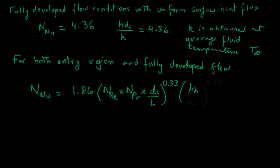Then in parentheses, μB/μW raised to power 0.14. In this case, L is the length of the pipe, Dc is the characteristic dimension, which is the inside diameter, and all the physical properties, including μB, where μB is the bulk viscosity, all these properties are obtained at the average fluid temperature, which we call T infinity.